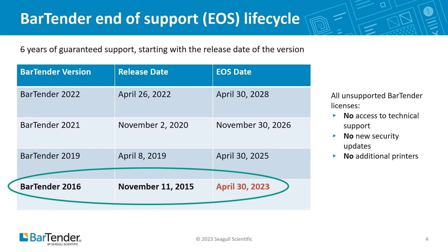we're going to start off with the end of support life cycle. So some of you on the call might be wondering what exactly is the Bartender life cycle. So basically, like many software companies, whenever we introduce a new version of Bartender, we guarantee a certain number of years for support for that particular release. Bartender actually guarantees six years for support, which is from the release date of that version.